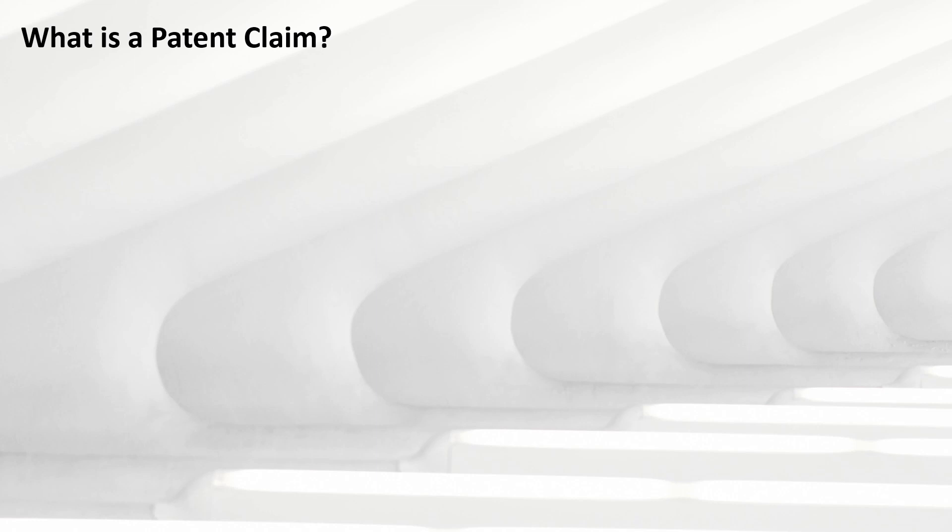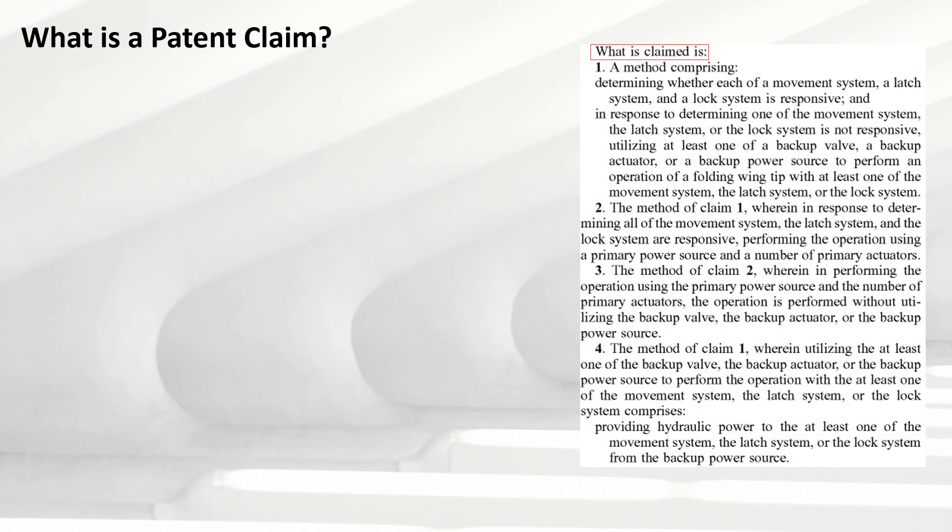So what is a patent claim? The first point states that a patent claim is a part of a patent specification. A patent specification is a techno-legal document that describes the invention which is eventually filed at the patent office. The patent specification includes various sections such as background, abstract, summary, brief description of drawings, detailed description, and similarly the patent claim forms a part of a patent specification.